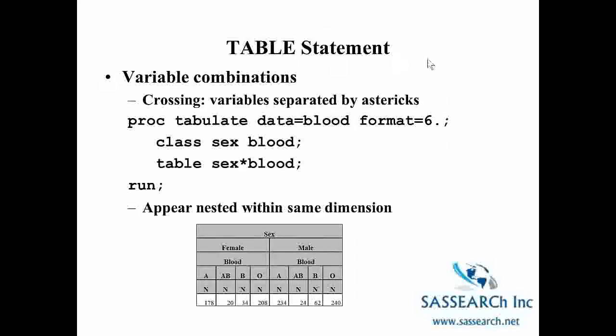Another way you can write the TABLE statement is with a crossing where variables are separated by asterisks. So here again we're looking just with gender and blood and instead of having a space between gender and blood or a comma we now have an asterisk. And so now what we're seeing in our table is that we have blood nested within gender in the same dimension. So we have females and then we have their blood type within females. And then males and their blood type within males. And so again this is just another way that we can define our table in PROC TABULATE.